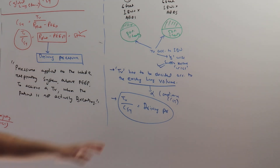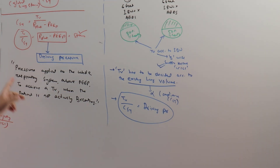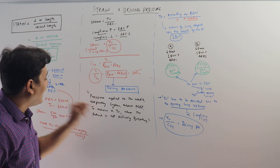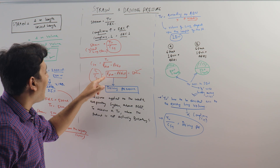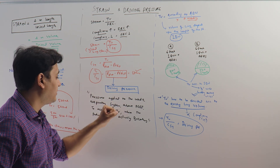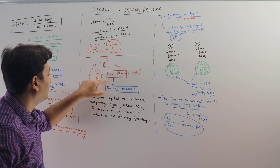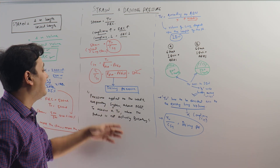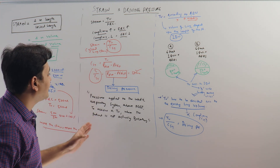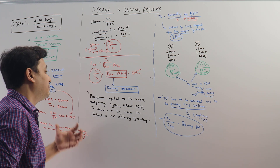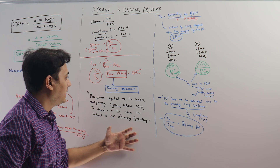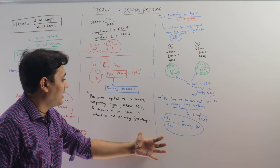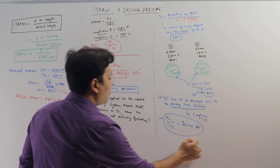Driving pressure tells us about the compliance of the lung. To achieve a tidal volume, if you require a high pressure, that means your lung is very stiff. If you require a lesser pressure to achieve the same tidal volume, your lung is more compliant. So if a patient has a low driving pressure, you are requiring less pressure to achieve the tidal volume — that is a good lung and mortality is better. If a higher pressure is required, driving pressure is high, and that implies increased mortality.